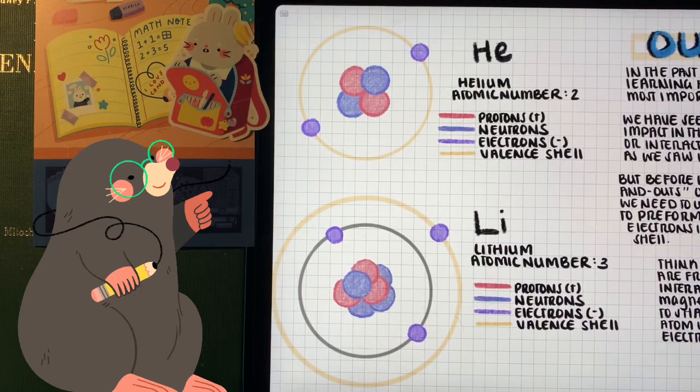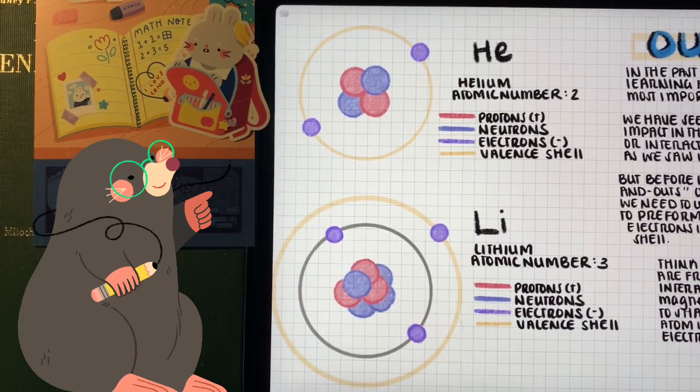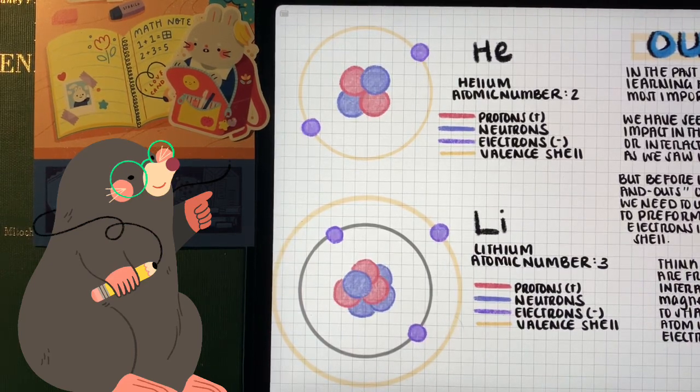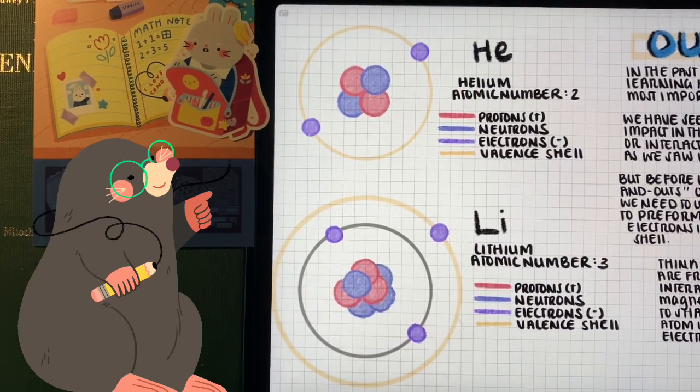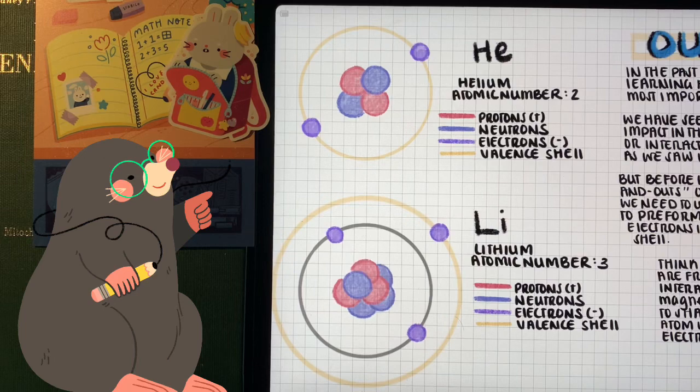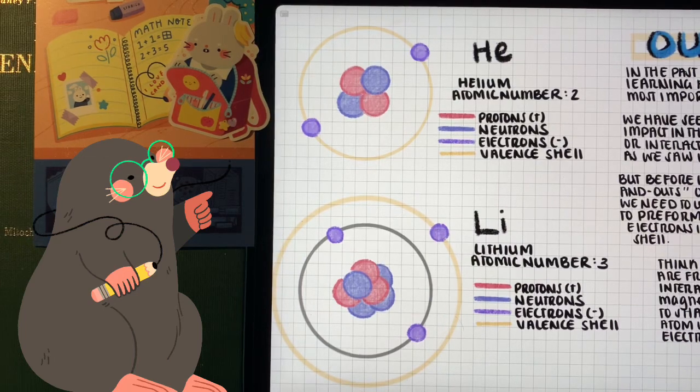For example, here we see helium with two protons and lithium with three. And in the periodic table, it goes hydrogen, helium, and lithium. So we can see how the atomic number is matched with the number of protons.